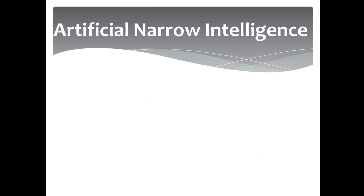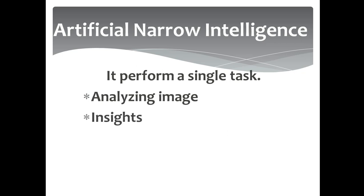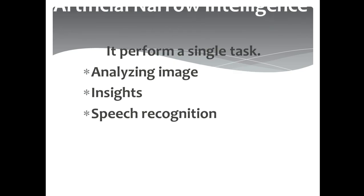The first is ANI, that is Artificial Narrow Intelligence. Artificial Narrow Intelligence performs a single task. Narrow means it has less power — it can perform only a single task at a time. Its capabilities include analyzing images, image insights, and speech recognition. These are the single tasks that it can perform.